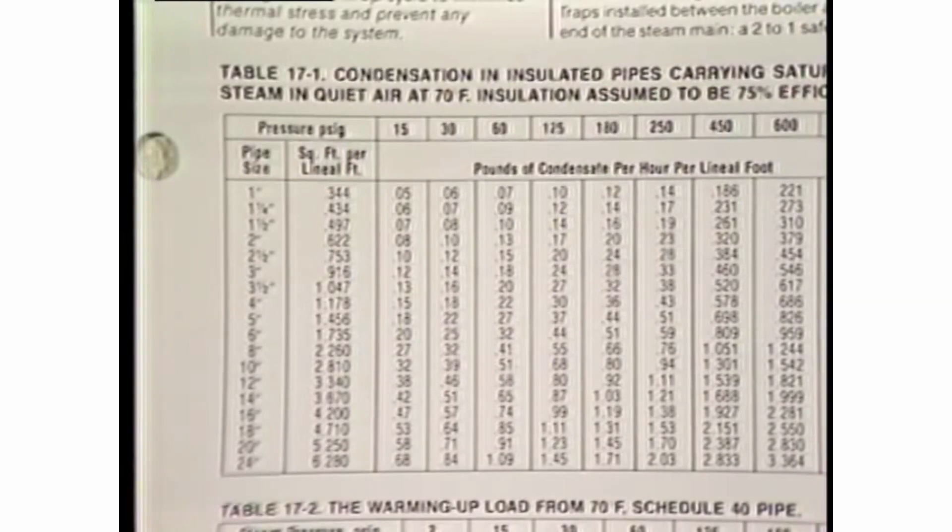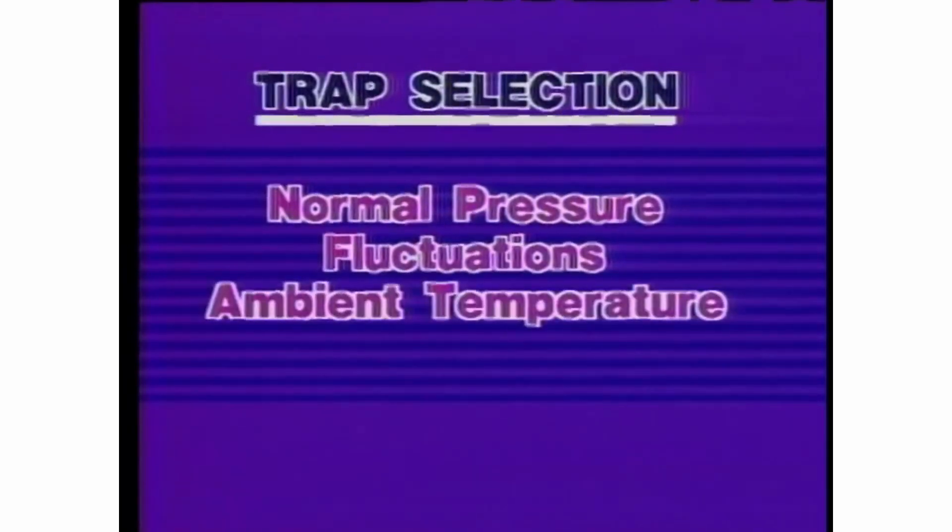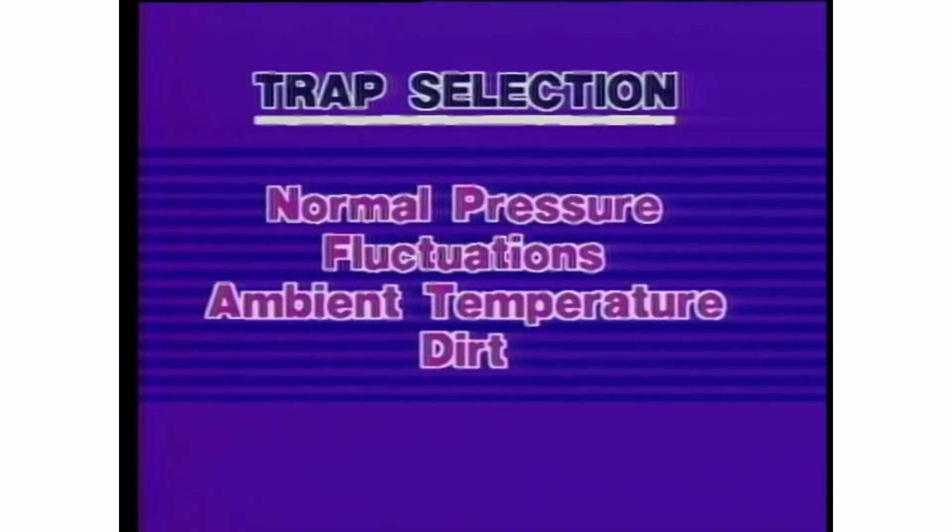Select a trap based on the calculated condensate load, not on the pipe connection size. Other considerations in trap selection are normal steam pressure, fluctuations in pressure, ambient temperatures, and the likelihood of dirt in the system.